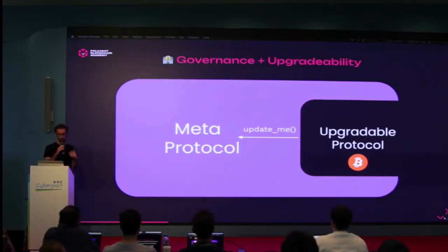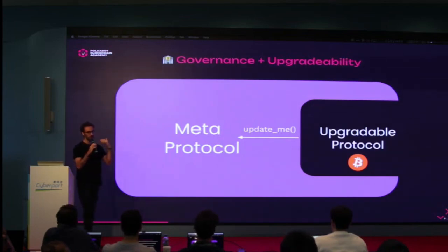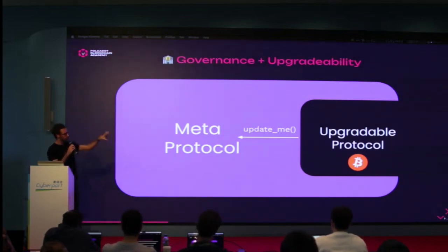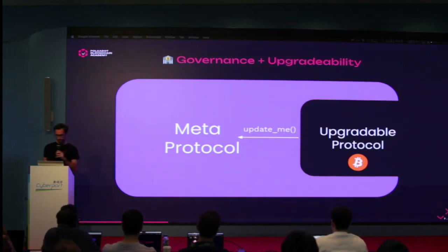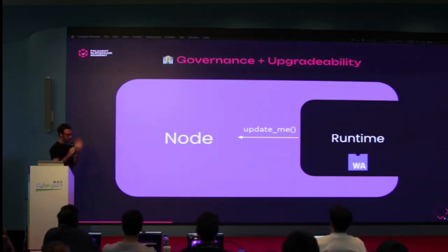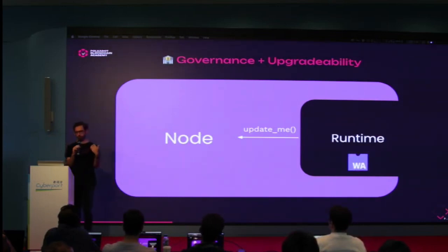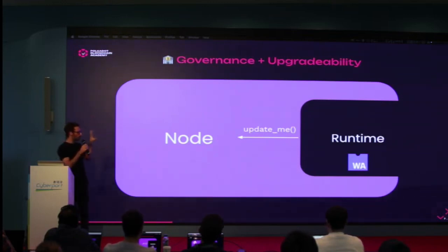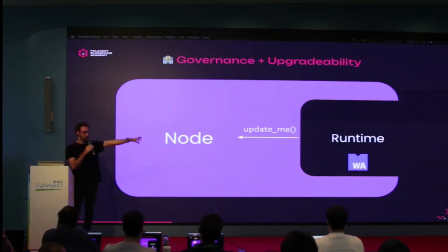Let me show you how a Substrate-based blockchain looks. The protocol is divided into two pieces: a meta protocol that is more fixed, whose duty is to actually run the protocol itself — and the protocol itself which is separated. This brings me to the main architectural design of Substrate: a separation. All Substrate-based chains are composed of two parts — a node and a runtime. This is where the word 'runtime' is reused, but it doesn't mean what we just said — it has a different meaning.